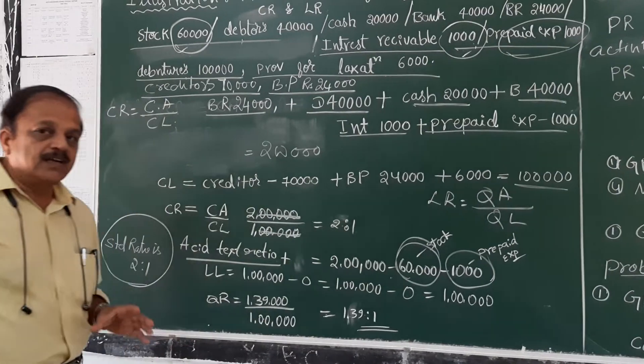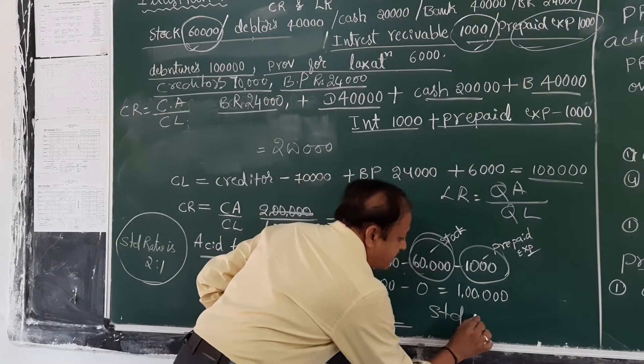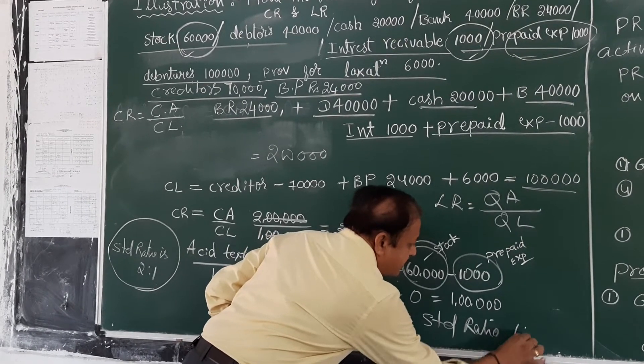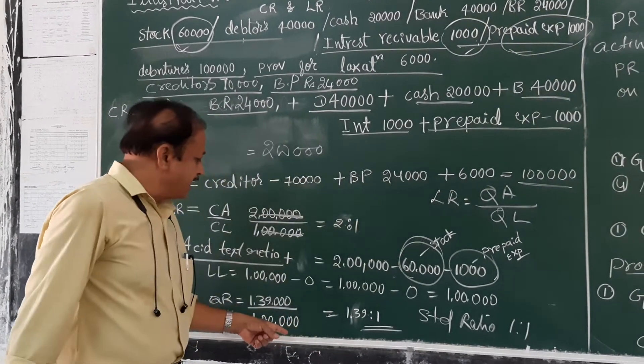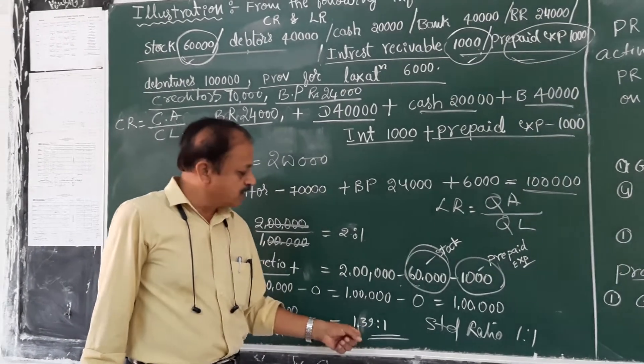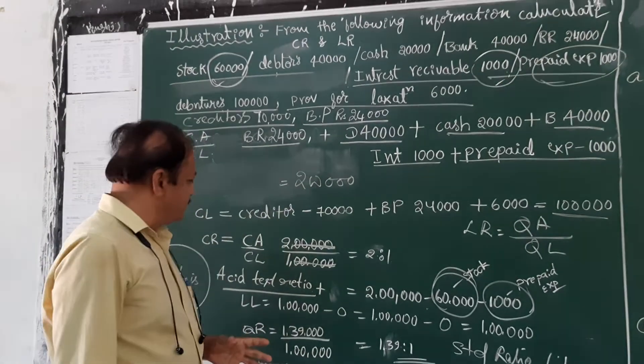Our standard quick ratio is 1 is to 1, whereas the actual quick ratio of this organization is 1.39 is to 1. This indicates the financial strength of the organization.